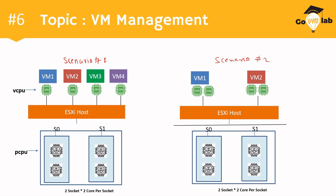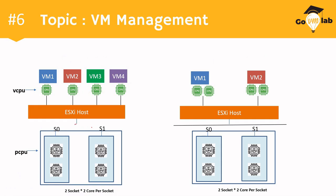In scenario number one, this is our ESXi host with four VMs — VM1, VM2, VM3, and VM4 — each having one vCPU assigned to them. So we have four VMs with one vCPU each running on this ESXi host. The physical CPU configuration is two sockets — socket zero and socket one — with two cores per socket, giving us a two-socket, two-core-per-socket configuration.